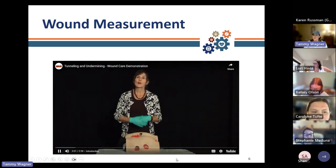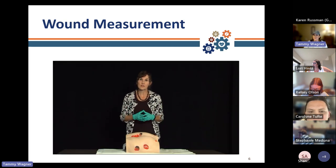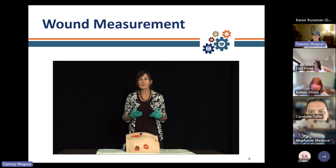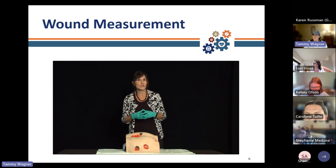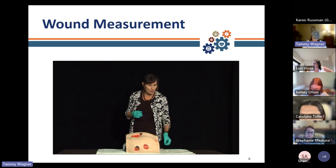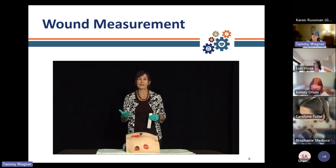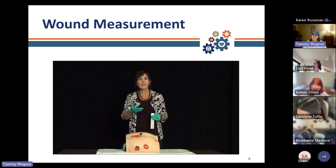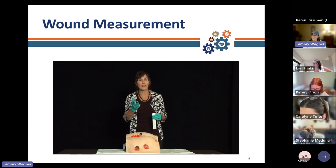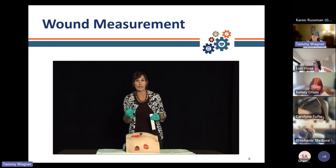One of the things I'd like to do is spend a few minutes to demonstrate the concepts of undermining and tunneling, because those seem to be issues that a lot of clinicians struggle with. When we talk about tunneling and undermining, those are a type of dead space we see in wounds. As part of our comprehensive wound assessment, we look at the length, width, depth of the wound, and also for the presence of any dead space such as tunneling or undermining.